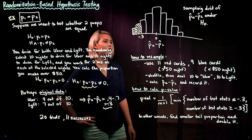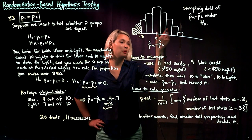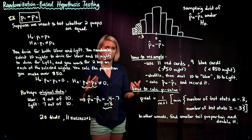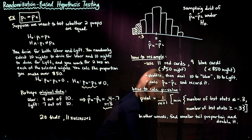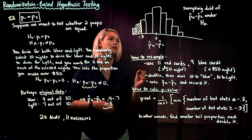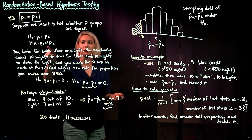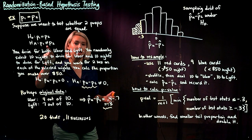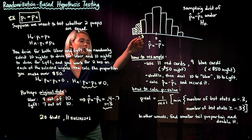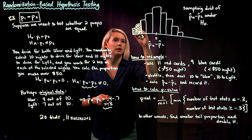The sampling distribution of our test statistic under the null hypothesis will be roughly centered at zero. We then find our original test statistic, negative 0.3, on that distribution. Since our alternative hypothesis is two-tailed, we find the smaller tail — the shaded area at negative 0.3.